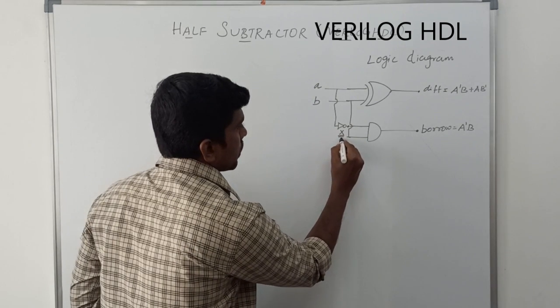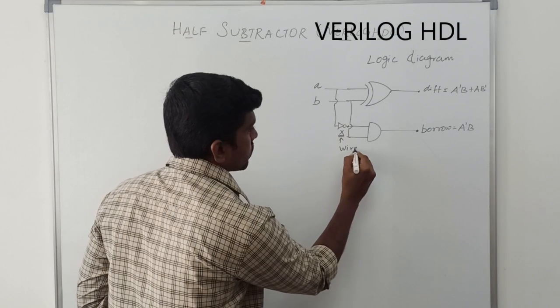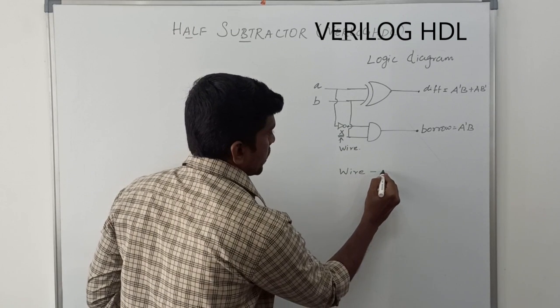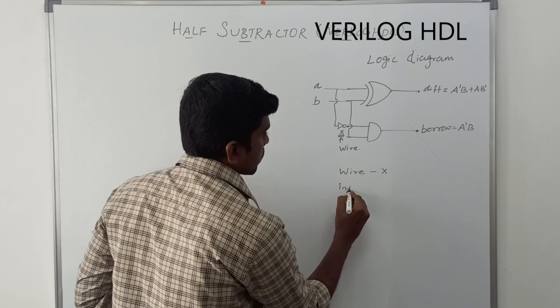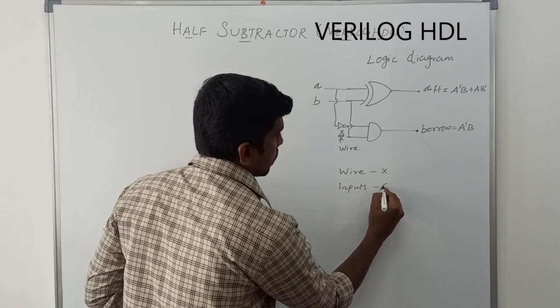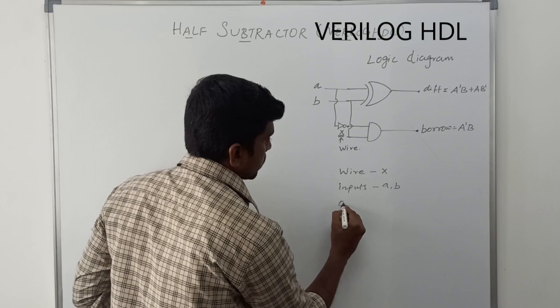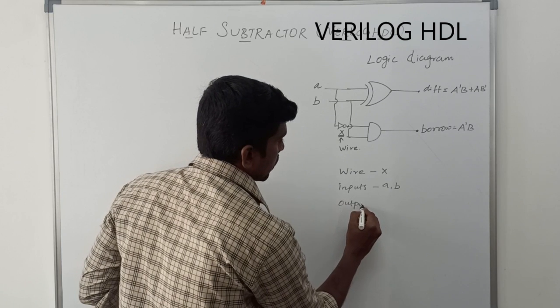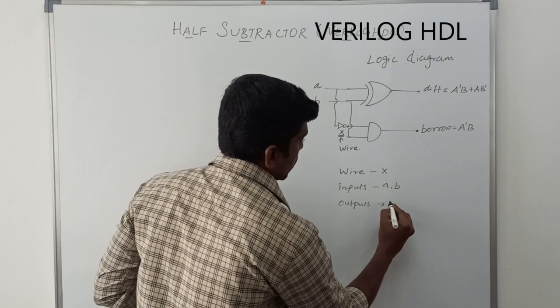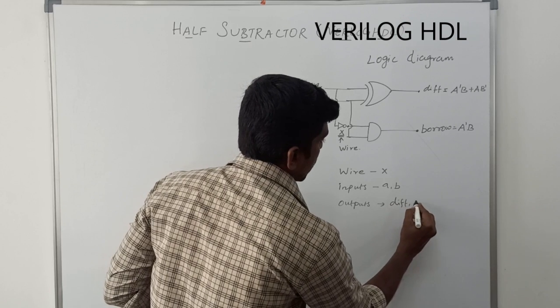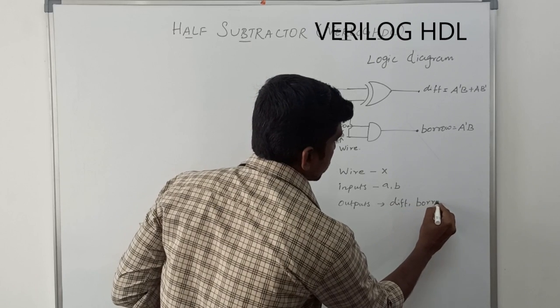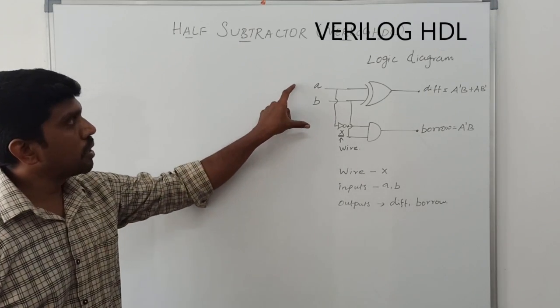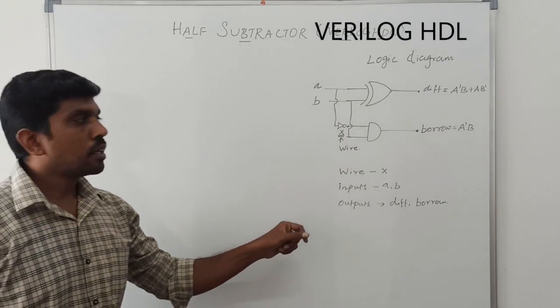Here, the output of NOT gate is represented as X. X refers wire. Wire is X. Inputs of A, B. Outputs of difference and borrow. This is the simple logical diagram for half-subtractor.